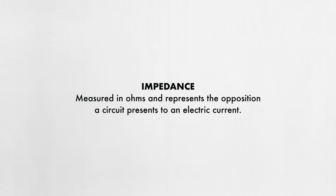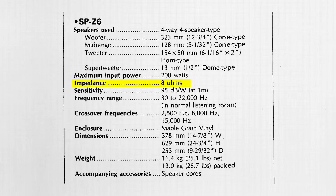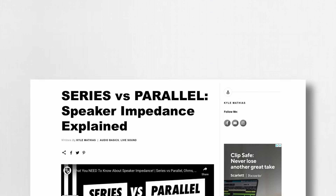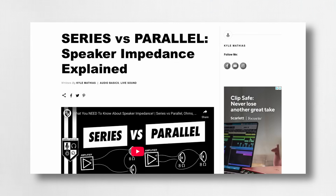Impedance is measured in ohms and refers to the opposition a circuit presents to electric current. The first step in choosing an amplifier is to determine the nominal impedance of your speaker or speakers. You can find the nominal impedance of your speaker in the technical specifications on the manufacturer's website. The nominal impedance of a speaker is most often 4, 8, or 16 ohms. If you're connecting multiple speakers to a single amplifier channel, finding the total impedance can be a bit more complicated, so check out the post I made on calculating speaker impedance using the link below the video.